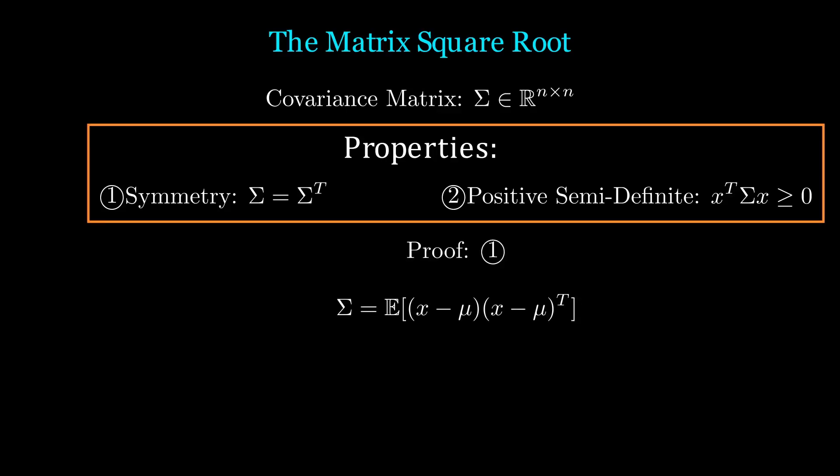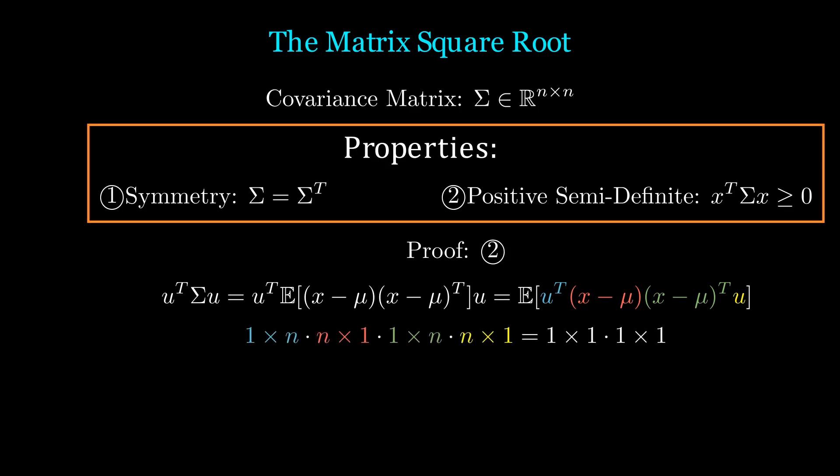The definition of the covariance is the expectation of x minus mu times x minus mu transpose. Given this, we can clearly see that sigma transpose equals sigma. Next, to prove the positive semi-definite property, we need to show that u transpose times sigma times u will be greater or equal to zero for any vector u. Let's bring u into the expectation and note that since u transpose times x minus mu is a scalar, it is equal to its transpose. Hence, we simply have the expectation of a squared scalar, which is always greater than zero.